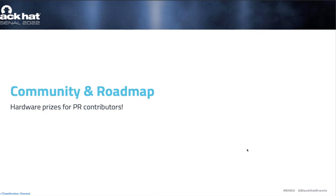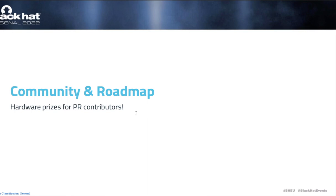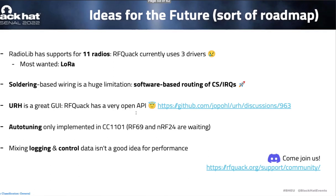The most exciting thing now is announcing our roadmap and prizes for contributors. Ideas for the future: RadioLib supports 11 radios, but in RFQuack we only use three — CC1101, Nordic Semiconductor NRF24, and RF69. We really want LoRa support, as well as other backends. LoRa is probably the most wanted.